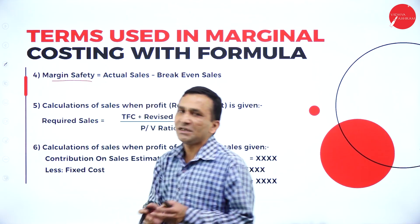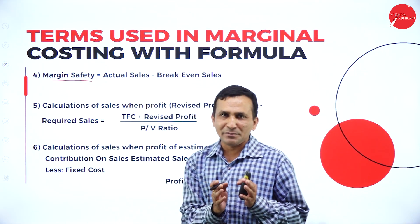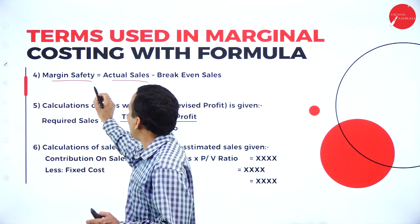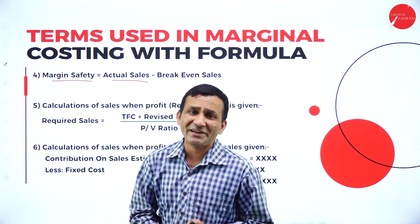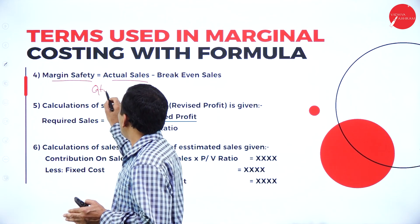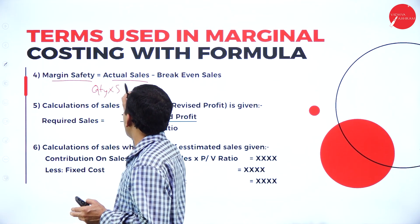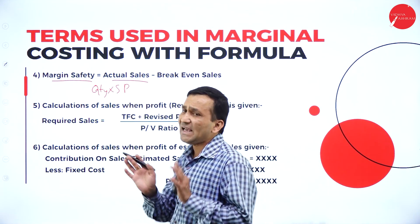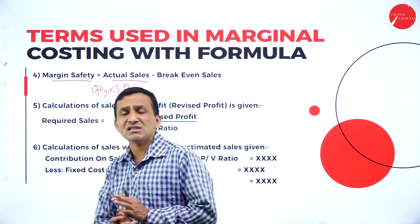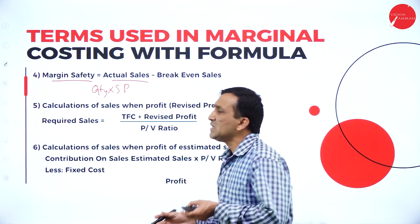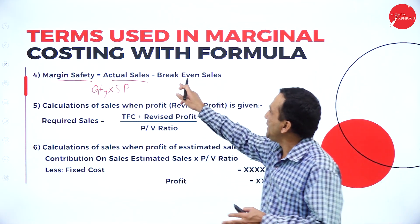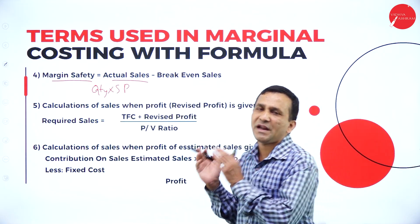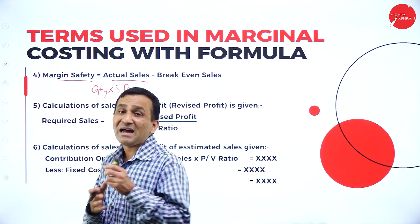Next is the margin of safety. To calculate it, take the actual sales value given in the question — for example, quantity multiplied by selling price gives actual sales. Then subtract breakeven sales. The actual sales minus breakeven sales gives you the margin of safety.